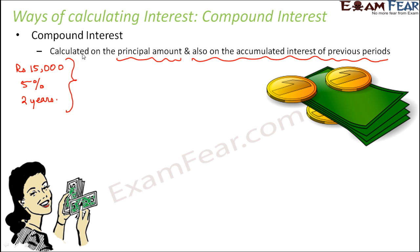In this case, what happens in the first year? We will see what happens every year, because in compound interest every year all the values are not the same. In the first year, the rate of interest is on the principal amount. But in the second year, the rate of interest is on the principal amount as well as on the interest of the first year.